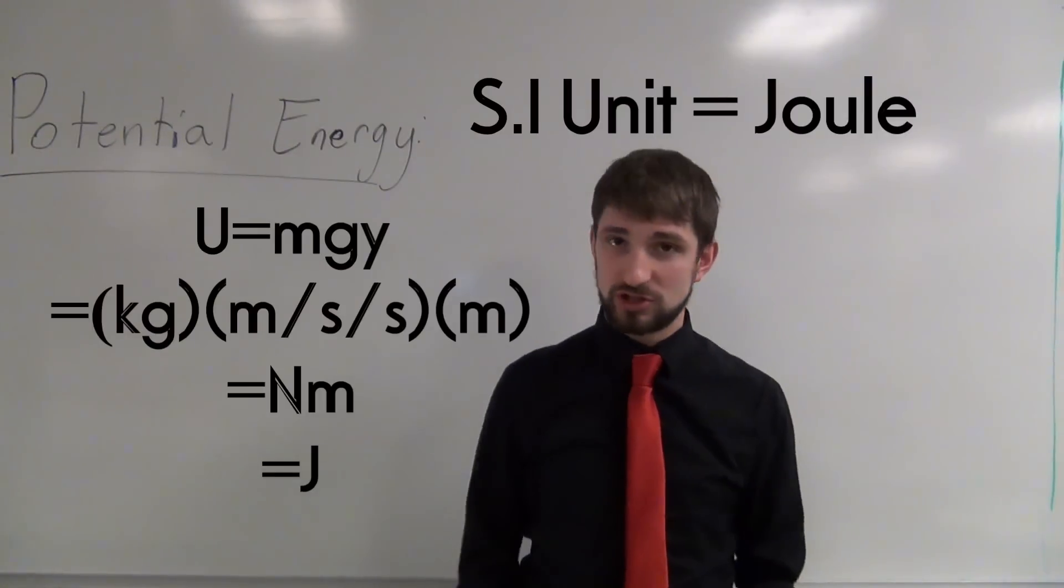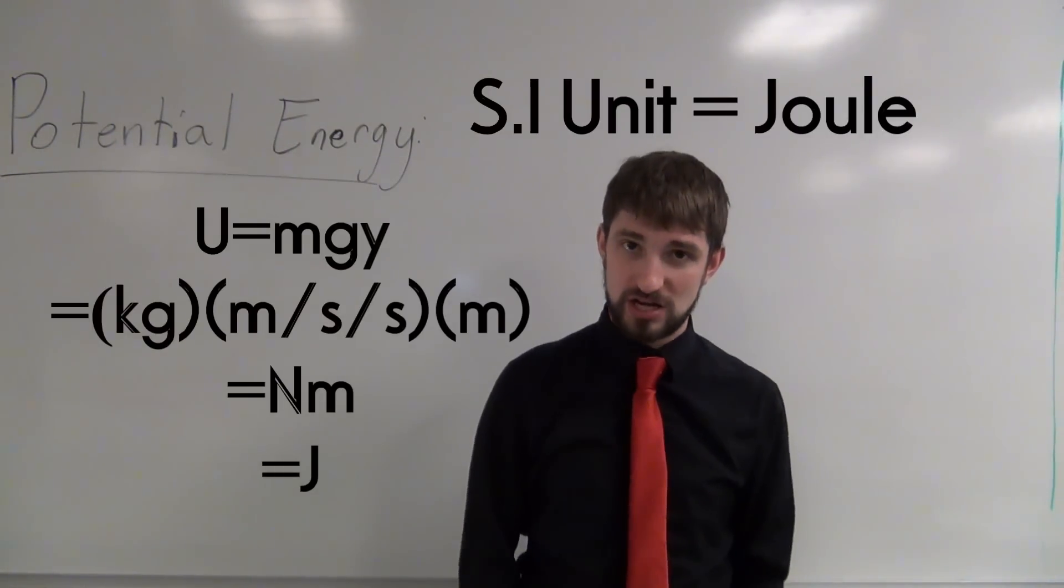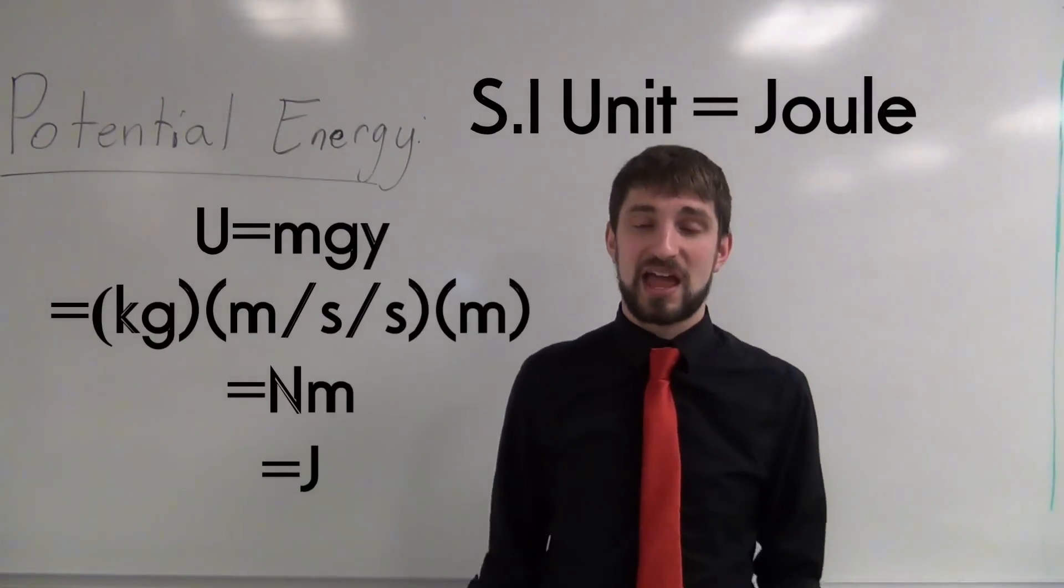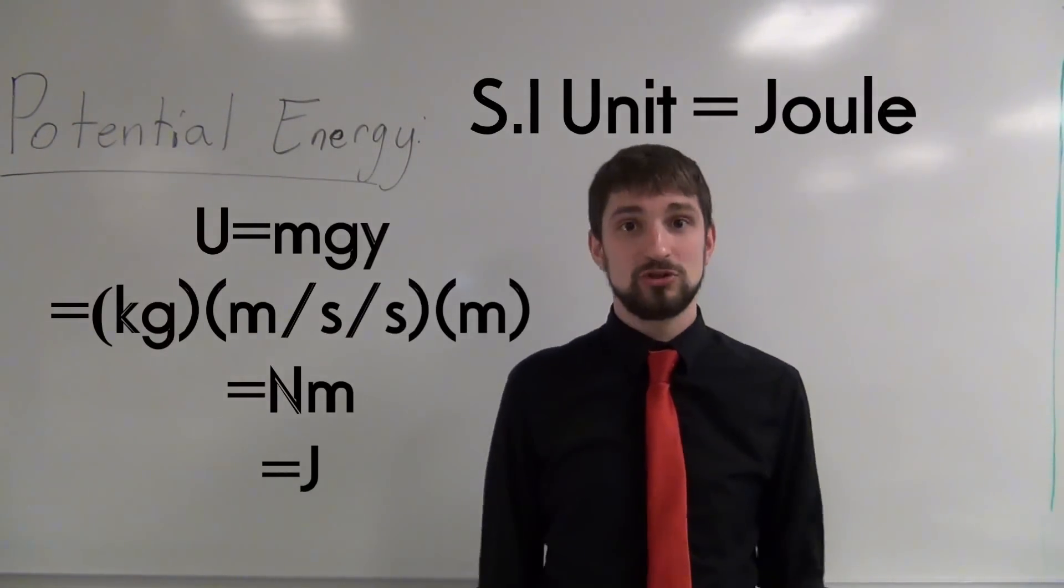If you take the equation we just looked at, potential energy is mass times gravity times height, then you can do a quick units check to see that the unit comes out to be a joule.